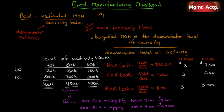Our predetermined overhead rate is our estimated manufacturing overhead divided by our activity base, which we used to apply overhead to work in process. We can now state this more precisely: it is the budgeted manufacturing overhead at the denominator level of activity.